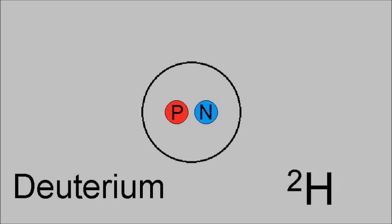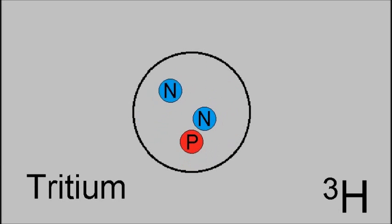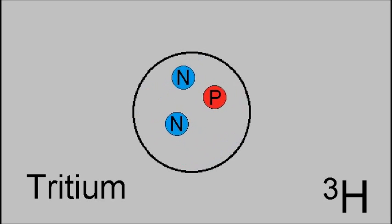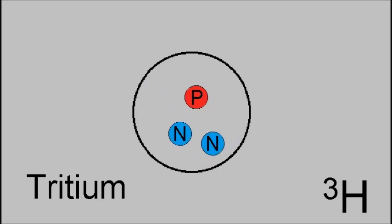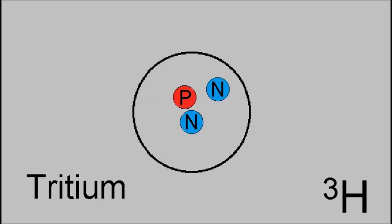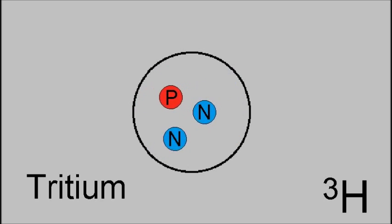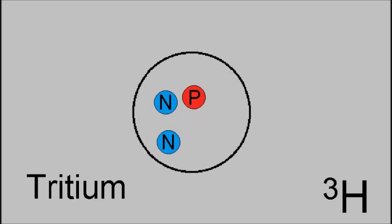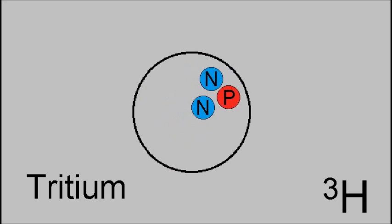Deuterium is stable. Tritium is the third most common form of hydrogen. It exists in only trace amounts. It has an atomic number of 1 and a particle number of 1, consisting of 1 proton and 2 neutrons. It has an atomic weight of 3.016492, and it has a half-life of 12.32 years.